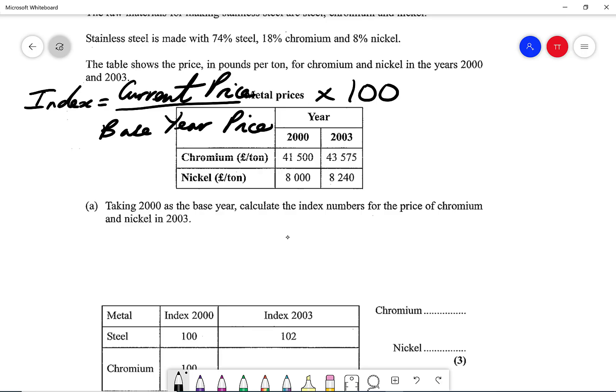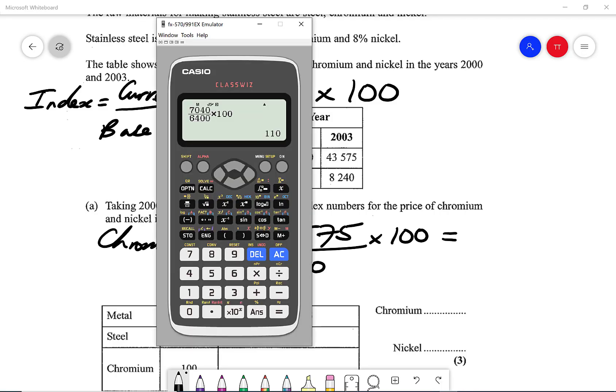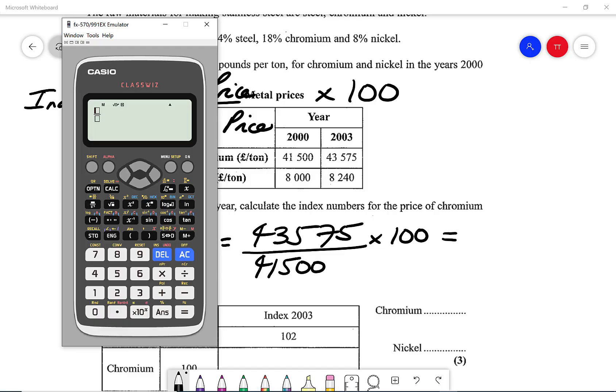Now for the chromium, the current price for chromium in 2003 is going to be 43,575 divided by the base year price, which is 41,500 times that by 100. And that on my calculator would give me the following here: 43,575 over 41,500 times that by 100, and that will give me 105.